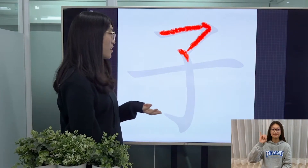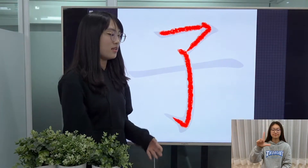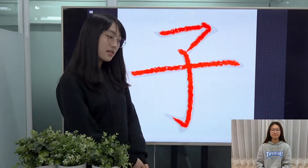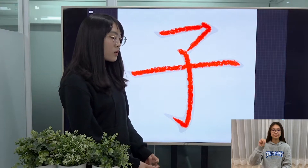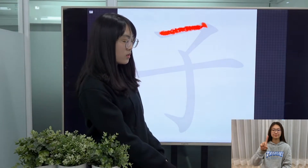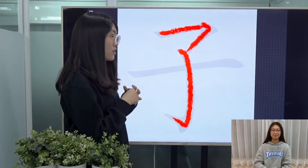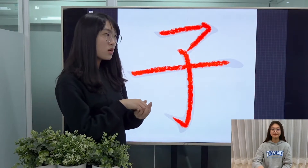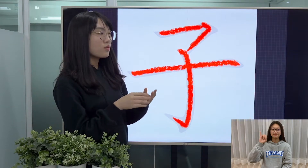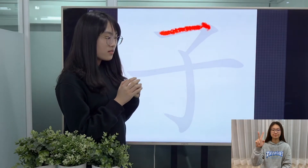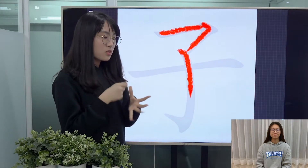This character is pronounced as 子 and it means a son. It can also be used after nouns to sort of describe something small.